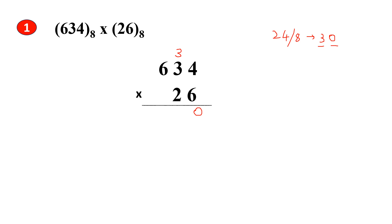Now multiply 6 with 3. 6 times 3 gives us 18. So 18 plus 3 is 21. 21 is not an octal number, so let's convert it. Divide by 8 — we get quotient 2 and remainder 5. So 5 comes here as the sum and the 2 goes as the carry.